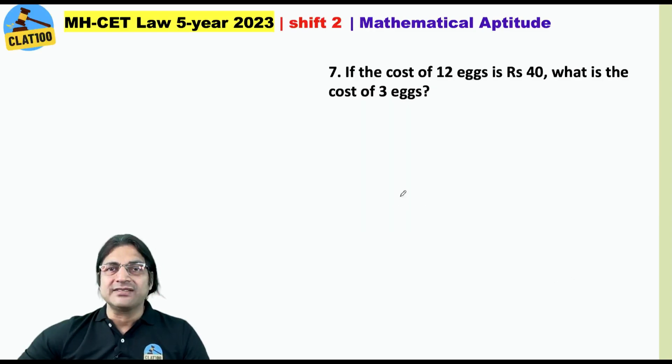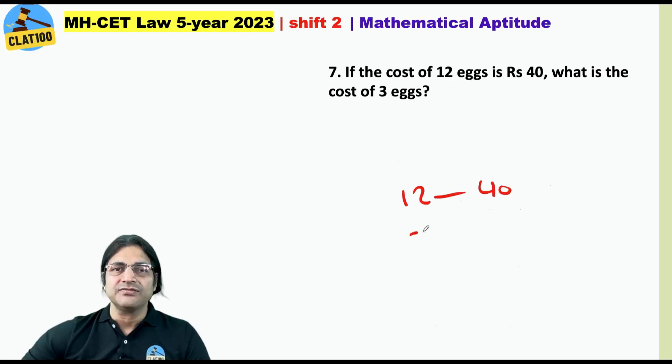The cost of 12 eggs is 40. What is the cost of 3 eggs? 3 is one-fourth of 12, so your answer is one-fourth of 40, that is 10.